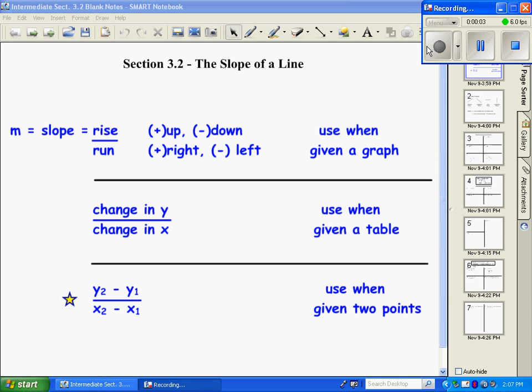Section 3.2 is the slope of a line. There's three different formulas for slope. This first one, M, is the letter that represents slope, and it's your rise over your run. This formula is mostly used when you're given a graph, and you can count.